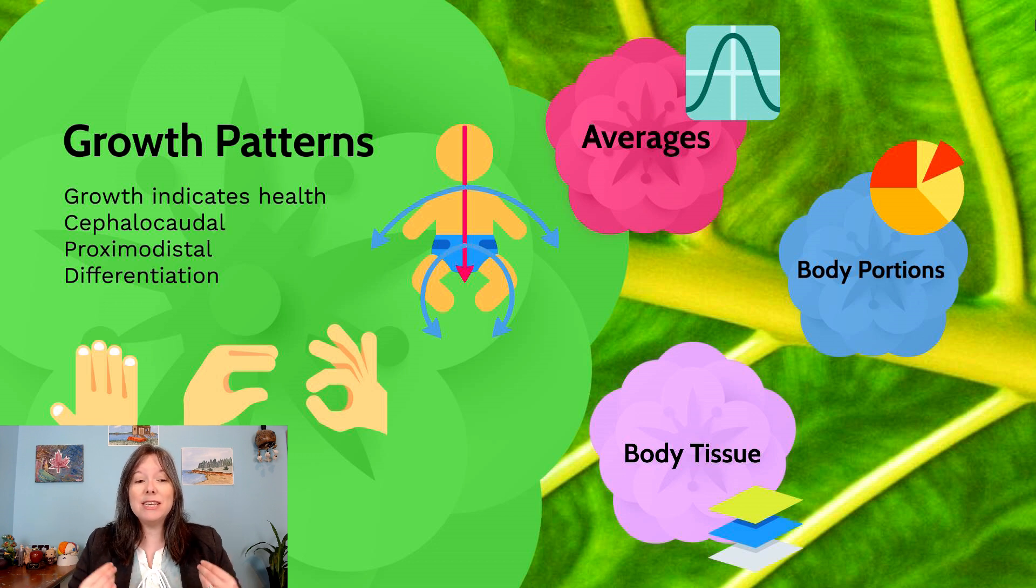The first of which is cephalocaudal development. This is the idea that development tends to start off in the head and move towards the feet. Cephalo is the head, caudal is the feet. And so we've seen this in Unit 2, prenatal development. We've seen how in the embryo, for instance, the head was much more developed than the little buds of the arms or the legs. And so things started to develop from the head down.